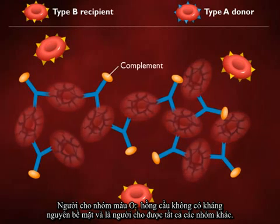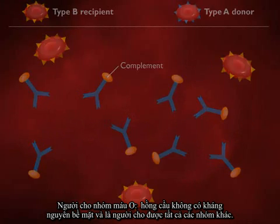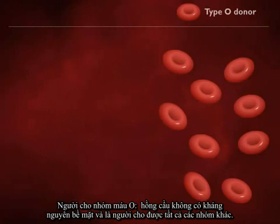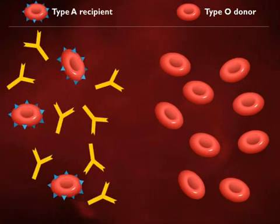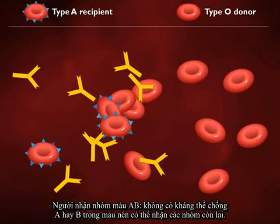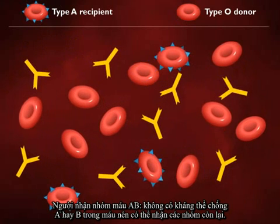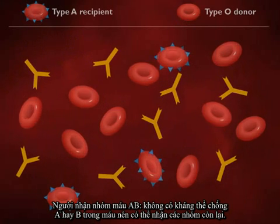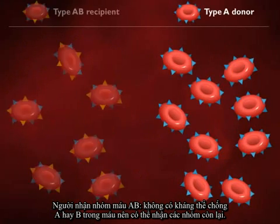Persons who are type O lack A and B antigens on the surfaces of their red blood cells, and are therefore universal donors. Persons with type AB blood lack antibodies against A or B antigens, and are therefore universal recipients.